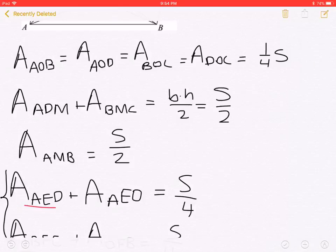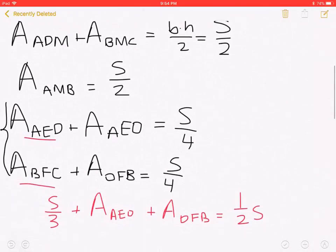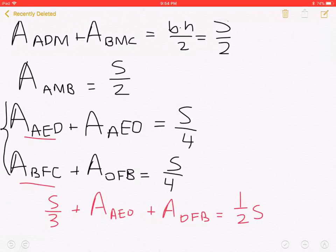Area of AED plus area of AEO is equal with S over 4. The area of BFC plus the area of OFB is equal with S over 4.